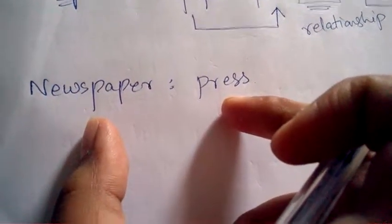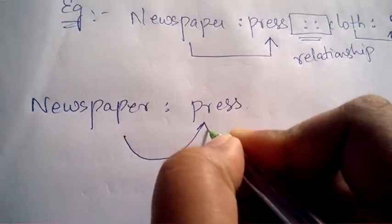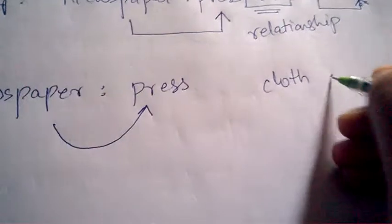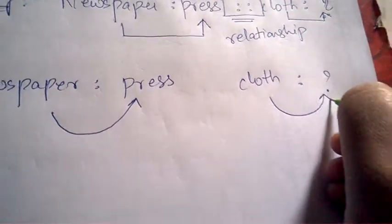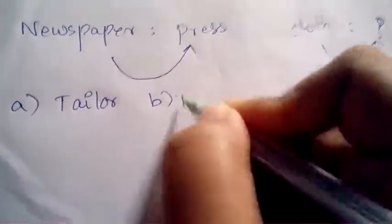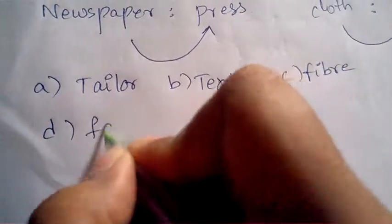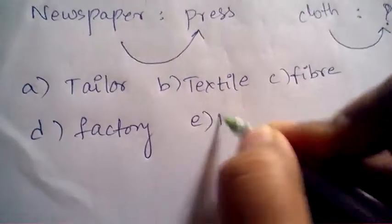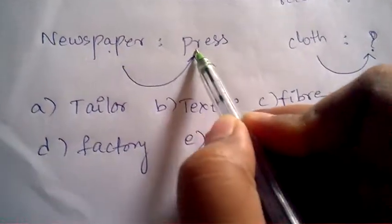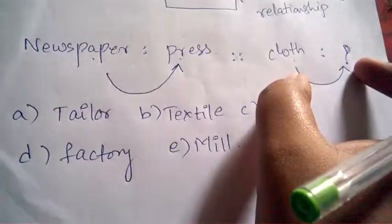The relationship between newspaper and press is: newspaper is prepared in the press. Now, cloth followed by a question mark means: cloth is prepared where? You will be given four or five options. The options are: tailor, textile, fiber, factory, and mill. The same relation that exists between newspaper and press should be applied to cloth.